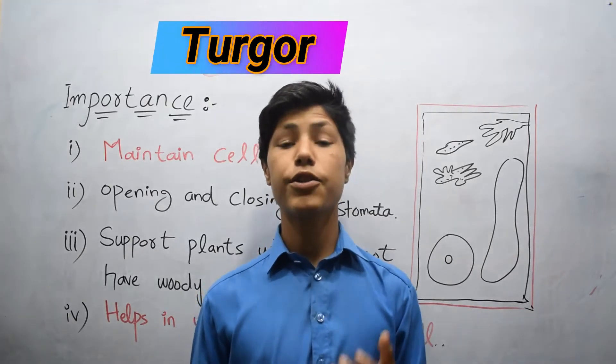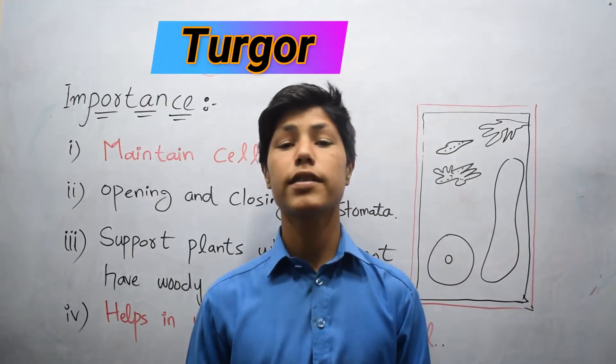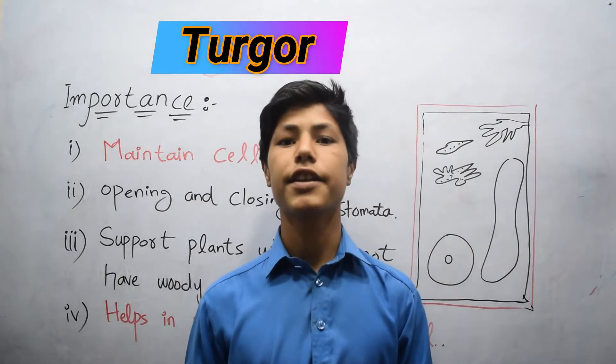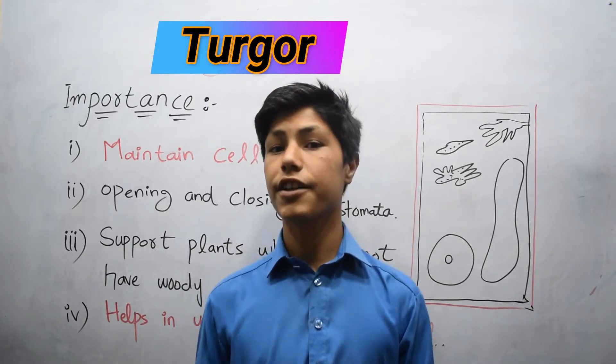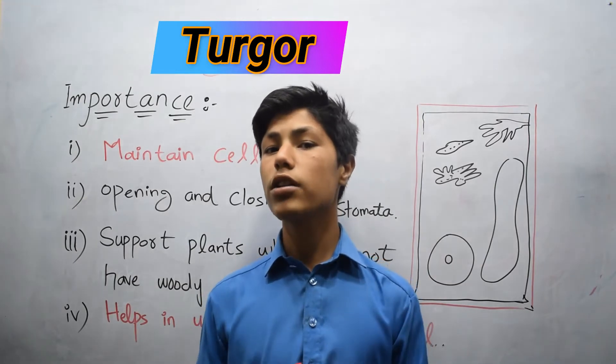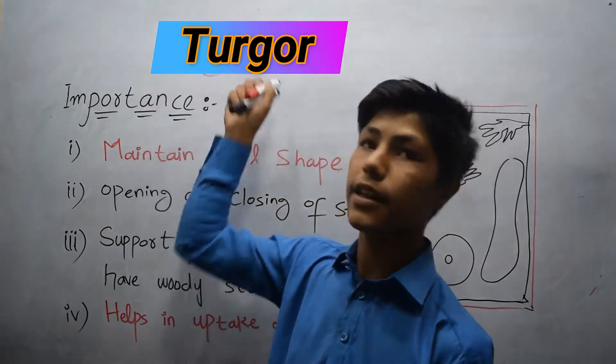The swelling of the cell due to absorption of water is called turgidity. The cell is called turgid, and the whole condition is called turgor.